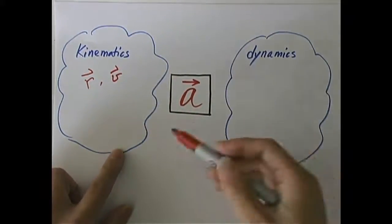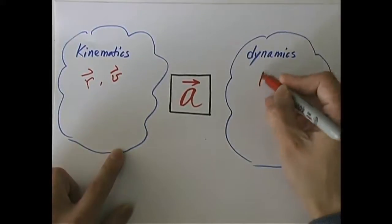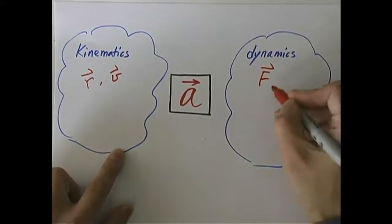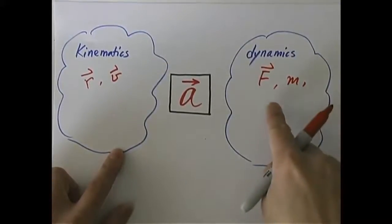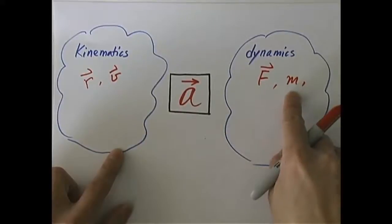In dynamics, we have the reason behind motion. We have the force, and we introduce other quantities, mass and other things. The force is the reason behind motion, and the M tells you just how much resistance the object has to the change in motion.